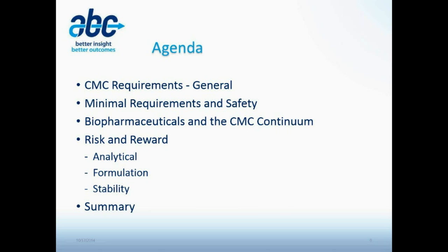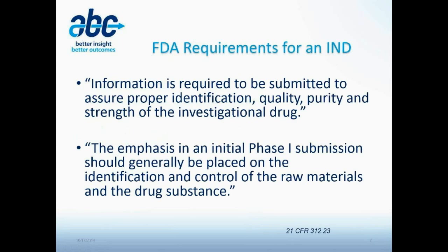As stated in 21 CFR 312.23, information is required to be submitted to ensure proper identification, quality, purity, and strength of the investigational drug. The emphasis in an initial phase 1 submission should generally be placed on the identification and control of the raw materials in the drug substance.